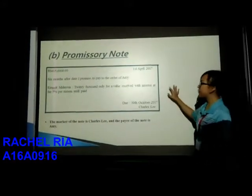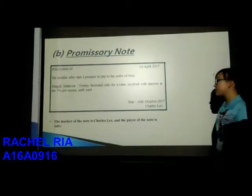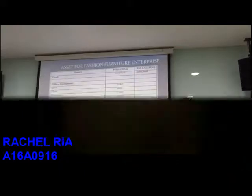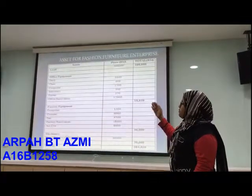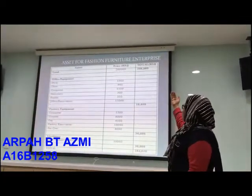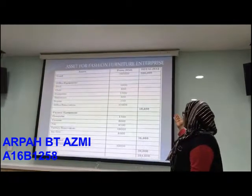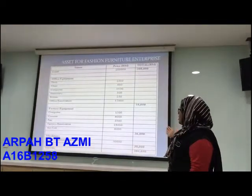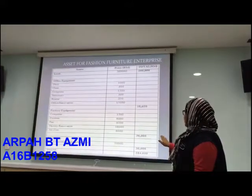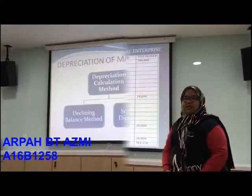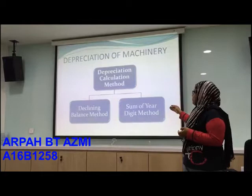For question B, this is the example of our pro-history notes. The maker of the note is charity and the payee is any. For our company, we have land, office equipment, factory equipment, and machinery. The total for land is RM200,000; office equipment RM18,650; factory equipment RM36,000; machinery RM30,000. The total is RM284,650. There are two ways to calculate depreciation: declining value method and sum of year digit method.